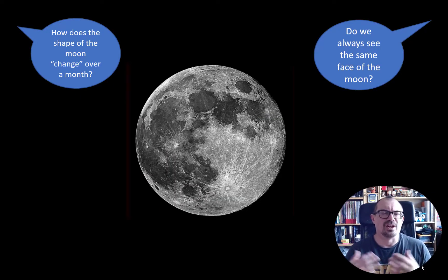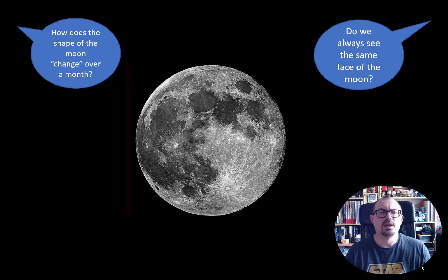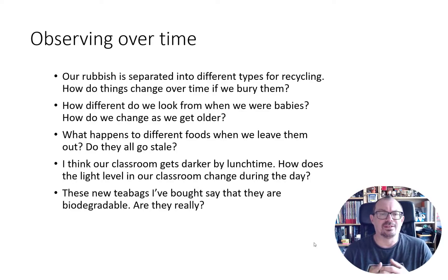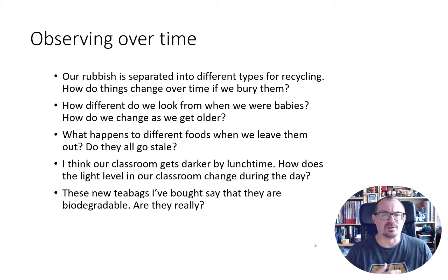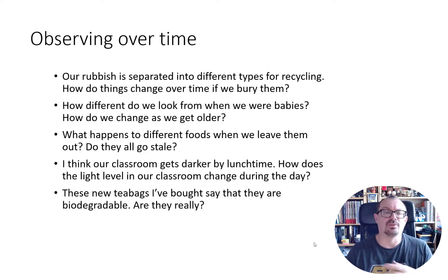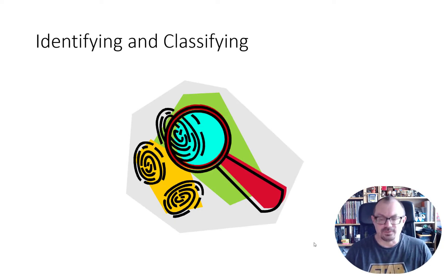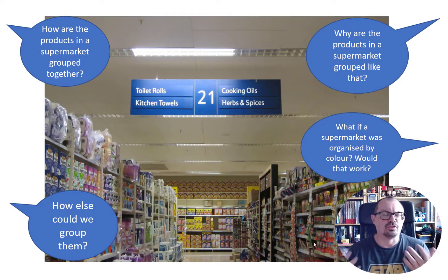In Year 5, when looking at how the shape of the moon appears to change, you can observe it over the course of a month. The moon doesn't change shape, but the lit portion we see changes — and by observing the craters you can confirm we always see the same face. Other observing-over-time investigations include: burying things and digging them up to check for biodegradation, looking at what children looked like as babies, observing different foods left out to go stale, monitoring light levels in the classroom throughout the day, testing whether tea bags claimed to be biodegradable really are, and watching a handprint on a blackboard disappear.